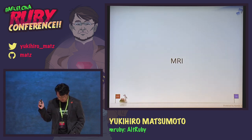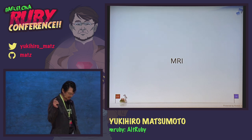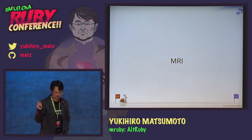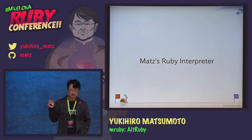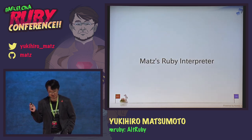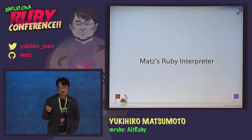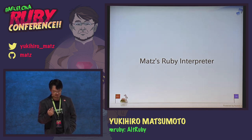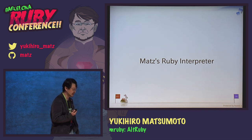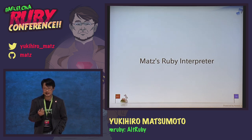We have the implementation of the Ruby language often called MRI, which stands for Matz's Ruby Interpreter. But I don't think it's a proper term. When I published the first version of Ruby in 1995 — that's old, 19 years ago — the whole interpreter was written by me, myself.